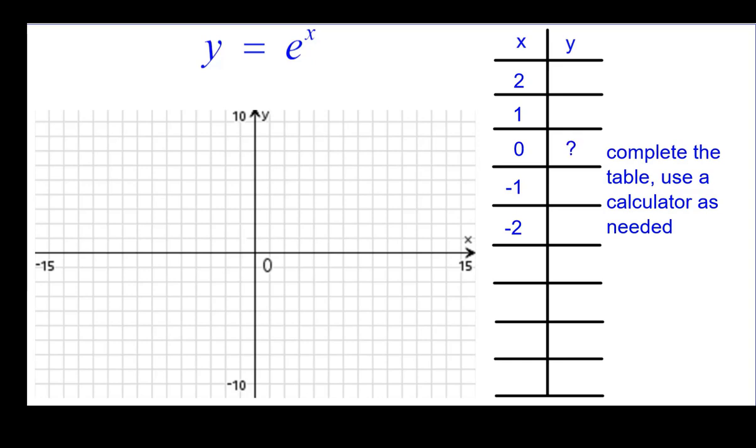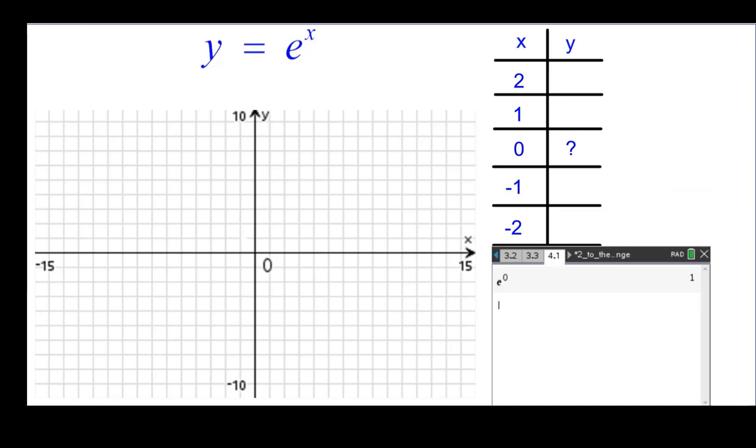So we said with zero, if you put in zero, e to the zero power is one. Any non-zero number raised to the zero power is one. e to the first power is just the value for e. We're going to round that to 2.7.